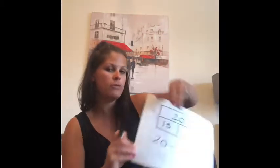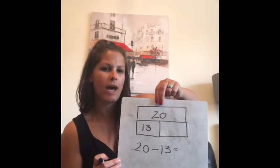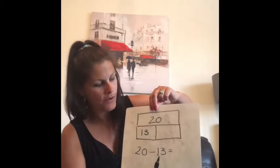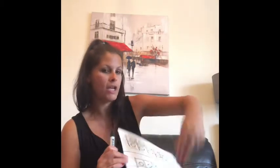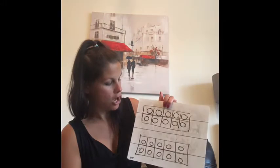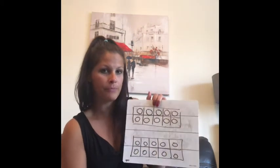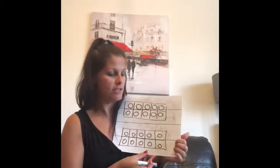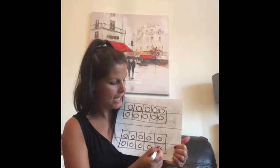And let's just look back. What am I taking away to find the answer? 13. I'm taking away 13. I'm going to start from the bottom when I'm taking away my tens frames. So I'm going to put a cross here.